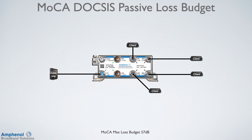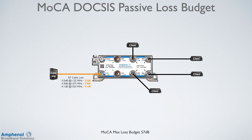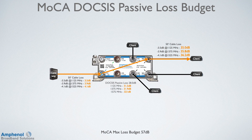Next we'll look at the loss budget using a DOCSIS passive device — an application where all the outlets are home run to one location. We'll calculate the loss from the gateway to the client on the top right: cable loss, the DOCSIS passive device loss of 28 dB, and cable loss. Add them all up for the total loss. In this example, all paths from the gateway to any client would be about the same — the only difference would be the cable loss to each client.